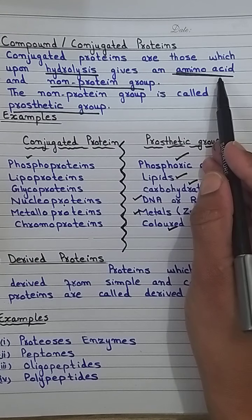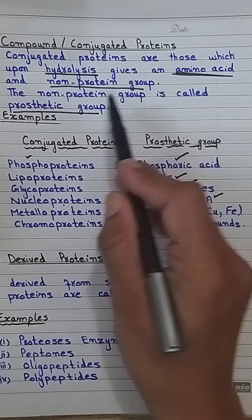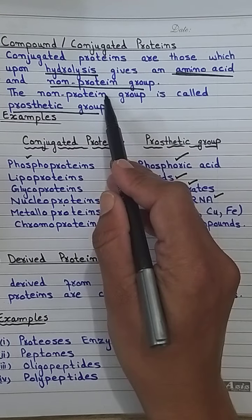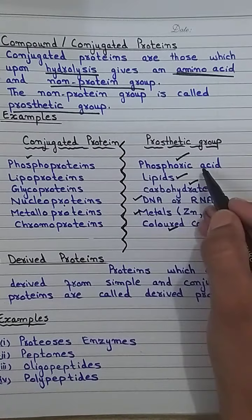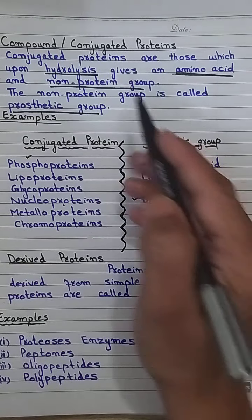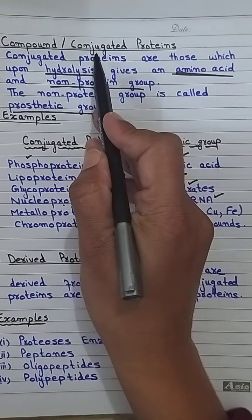So, these proteins whose building block is amino acids but which also contain a non-protein group are called compound and conjugated proteins.